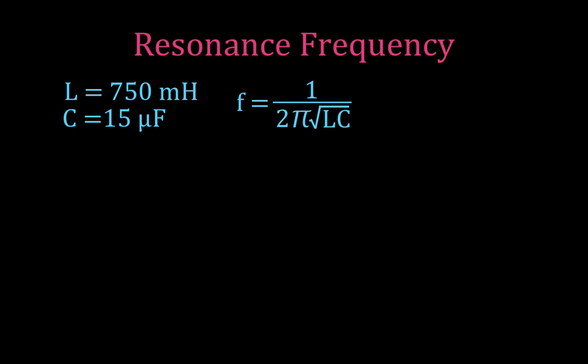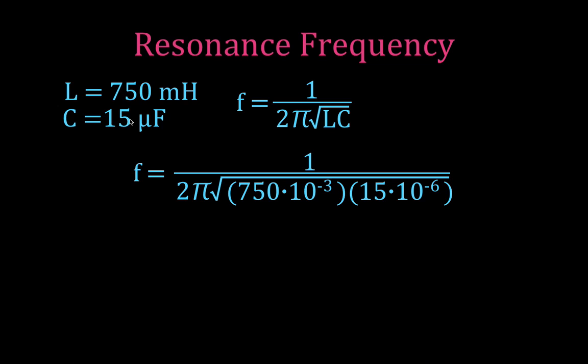Okay, now let's go through and do an example. These are the values I had from the previous videos I made on RLC circuits. We have an inductor with an inductance of 750 mH, a capacitor with a capacitance of 15 microfarads. I'm simply going to plug my values in for the frequency. It's 1 over 2π times the square root of 750 times 10 to the minus 3,